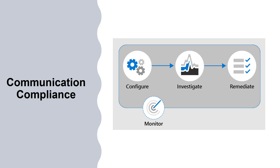Identifying and resolving compliance issues with communication compliance in Microsoft 365 uses the following workflow. It starts with configure, where admins identify compliance requirements and configure applicable communication compliance policies. The next step is investigate, where admins look deeper into the issues detected when matching communication compliance policies. The next stage is remediate, where you will remediate communications compliance issues. And finally, monitor — keeping track and managing compliance issues identified by communication compliance policies throughout the entire workflow process.